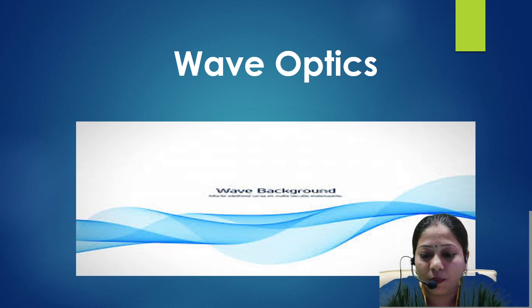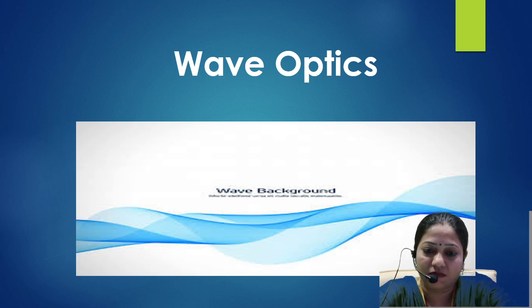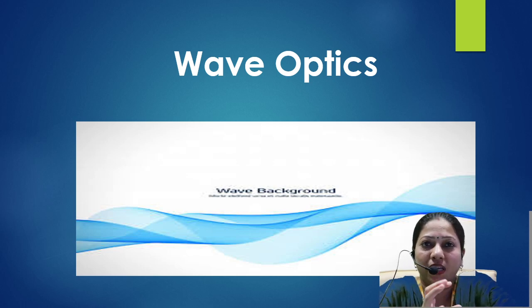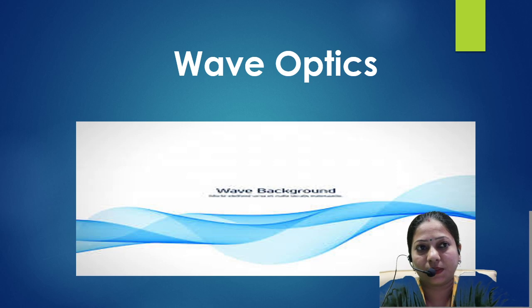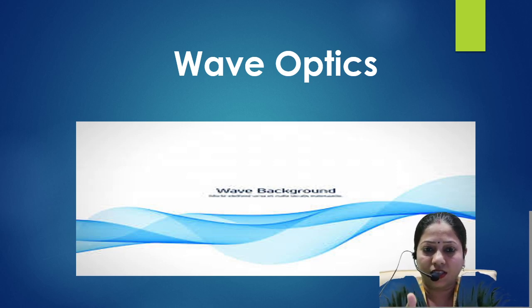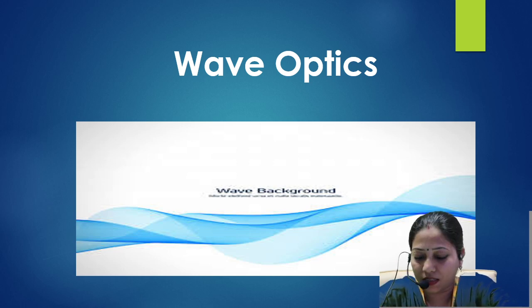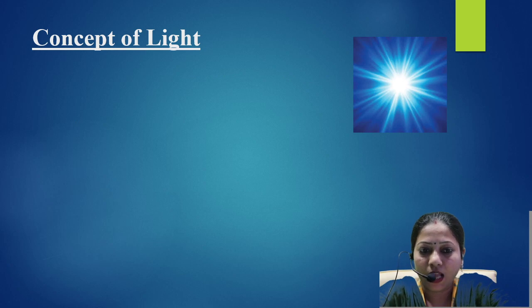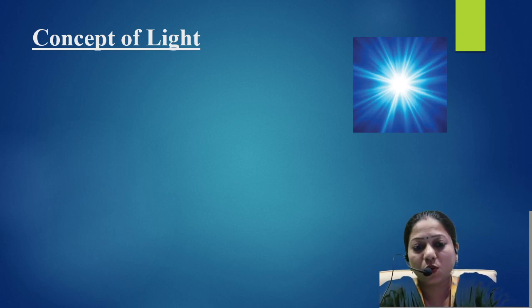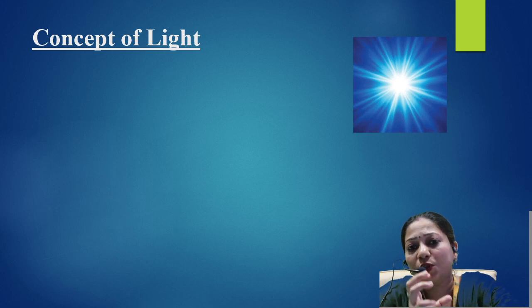Now we come to wave optics. Wave optics is a branch of physics which deals with wave phenomena like reflection, diffraction, interference, and polarization. All wave nature of light can be explained in this branch. Since wave optics is related to light, you should first know the concept of light.